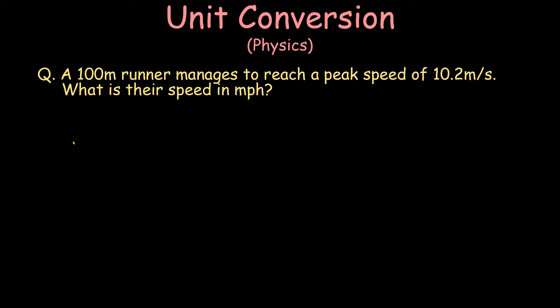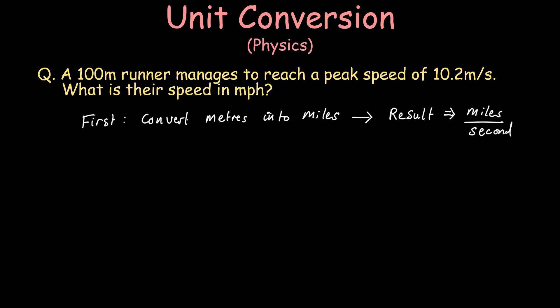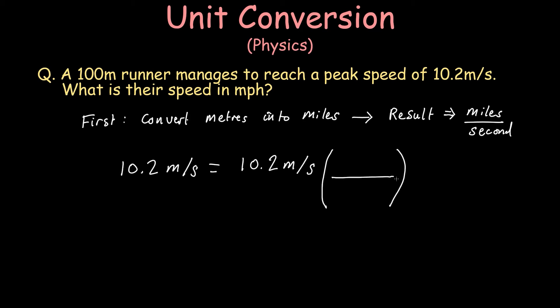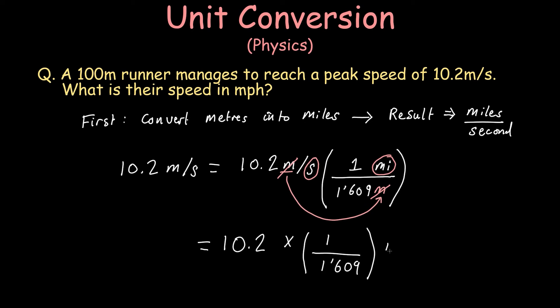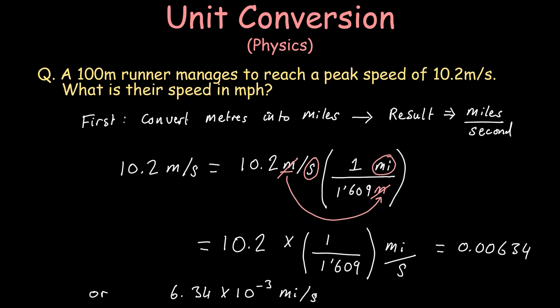It's easier to perform this calculation in two steps. First, we must convert meters into miles, giving us his speed in miles per second. When deciding on our conversion factor, we must make sure the numerator and denominator are in the correct place. The denominator should have the unit we want to cancel; the numerator should contain the unit we want to convert to. Because we want to convert meters into miles, miles goes on top and meters on the bottom. There are 1,609 meters to every mile. We can cancel out the meter units, leaving seconds in place. In scientific notation, this is 6.34 × 10⁻³ miles per second.